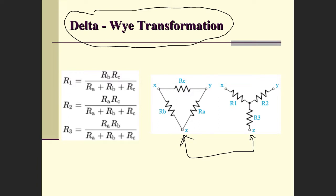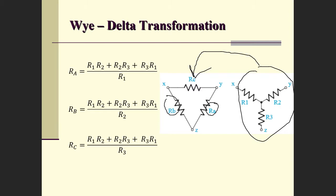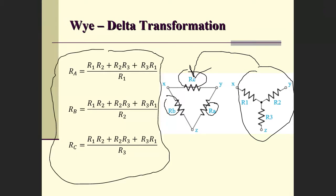This is the first transformation — starting with a delta and transforming it to a Y. We can also go the opposite way: begin with a Y and go to a delta. In that case, we calculate new values for Ra, Rb, and Rc using the corresponding equations. Once you know the equations and know how these configurations look, you can go from one to the other and make them equivalent.